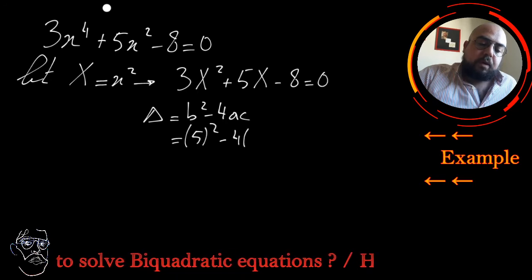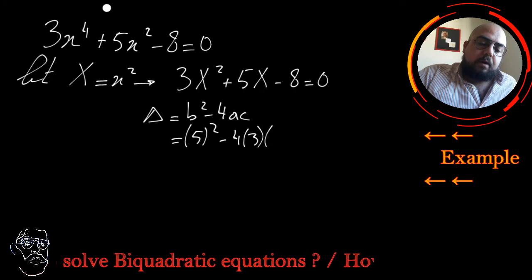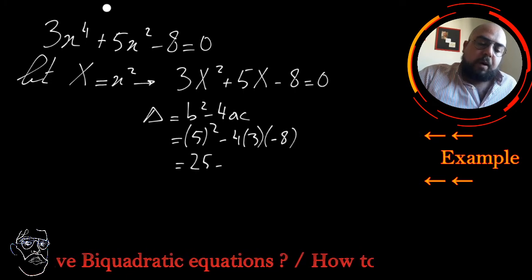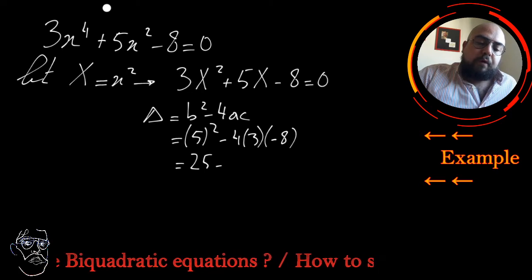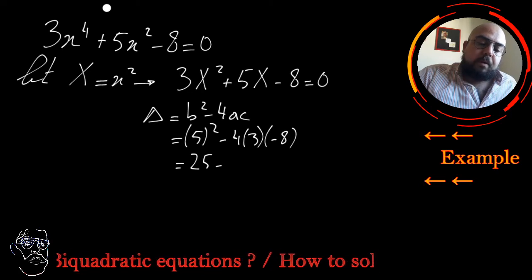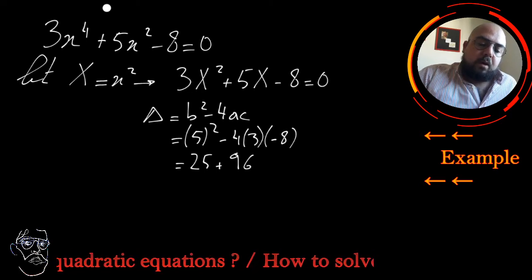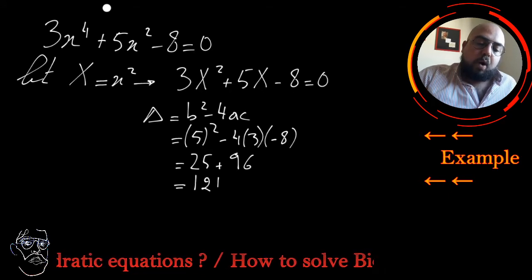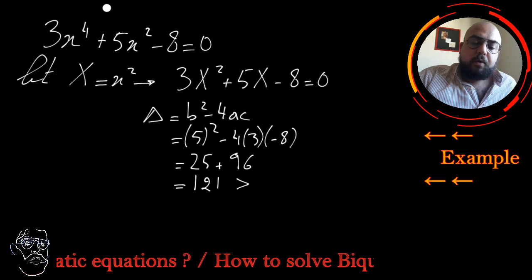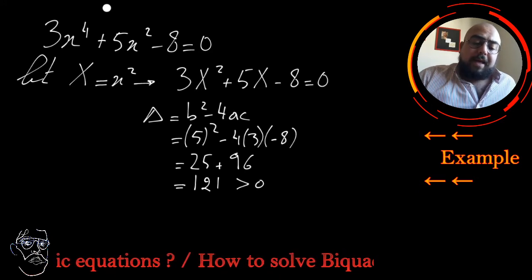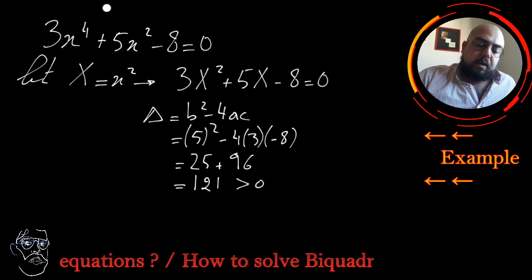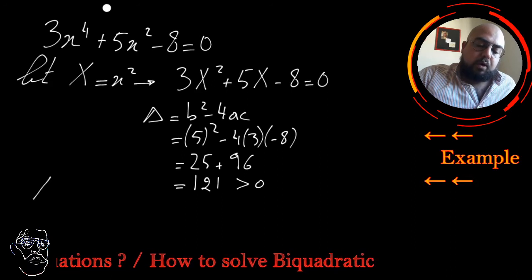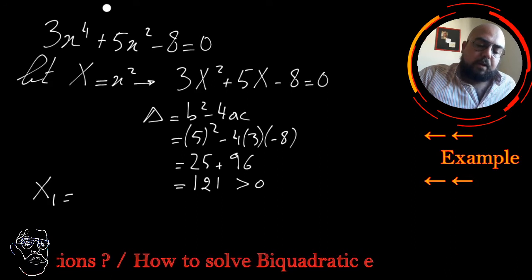I will calculate delta. Delta = b² - 4ac. Here b is 5, so 5² = 25, minus 4 times a (which is 3) times c (which is -8), so it's 25 + 96, giving a result of 121. 121 is a positive value, so in this case you have two real distinct roots.